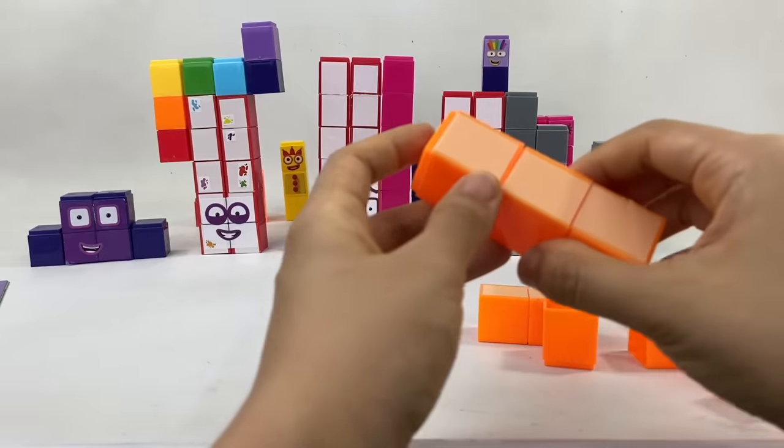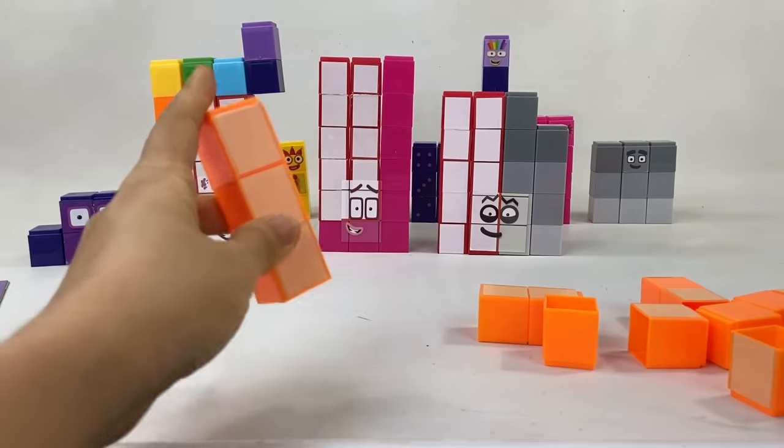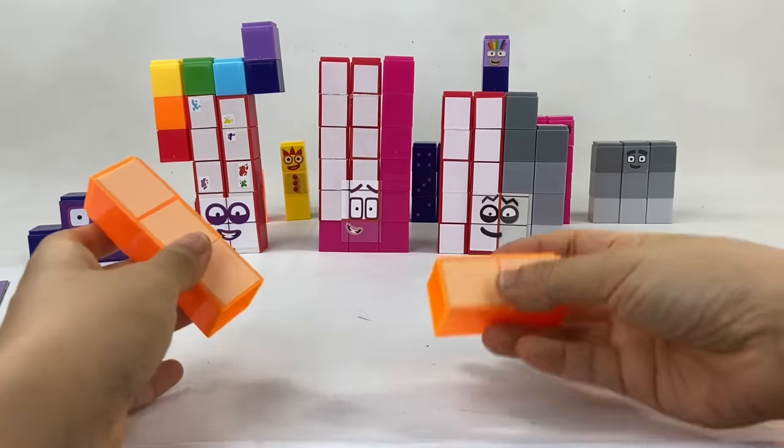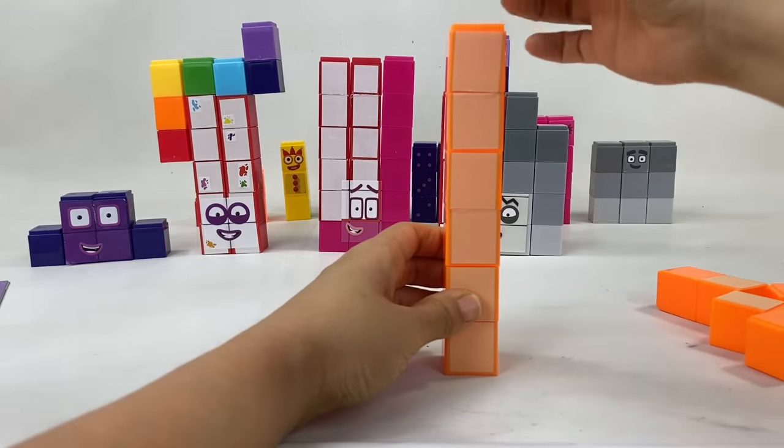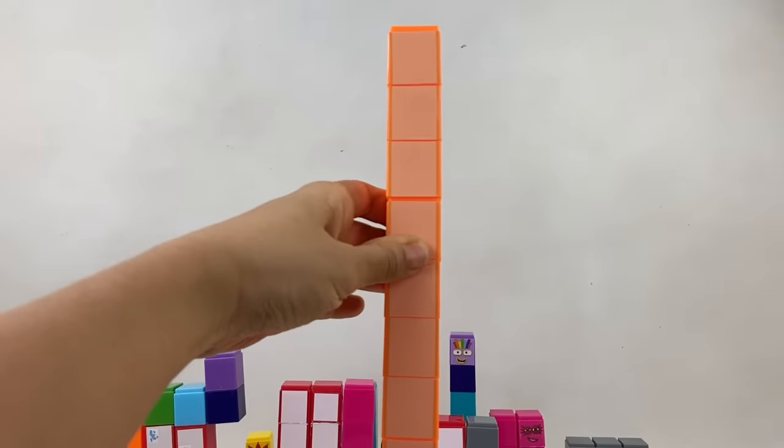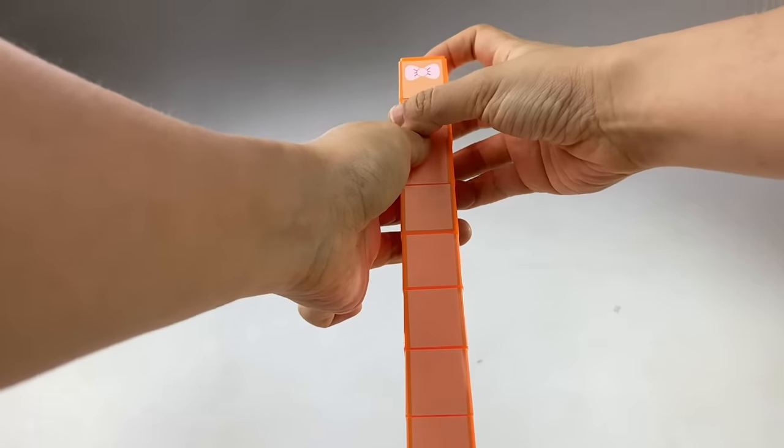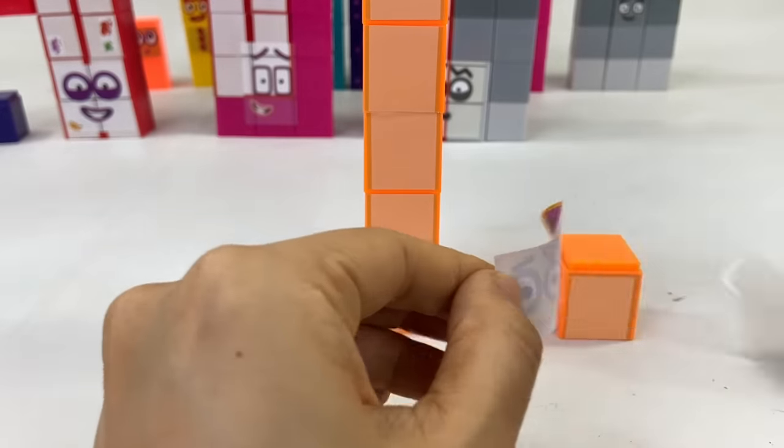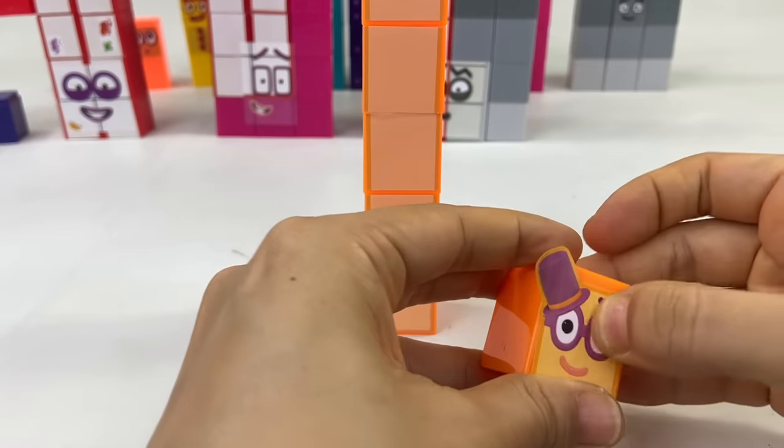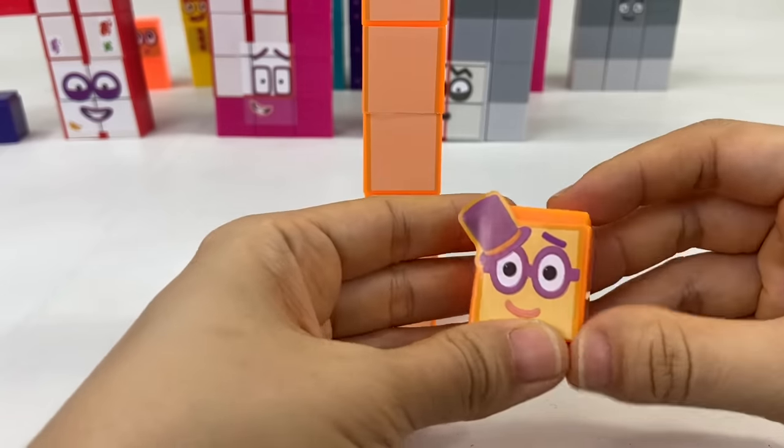And now for the one we've all been waiting for. Number block 20. He's made up of 20 light orange blocks. And he is the big dance number. In fact, his favorite dance is the two tens tango. And you can recognize him by his tip top top hat and his bow tie.